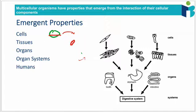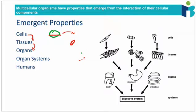The idea of emergent properties is that there's no individual cell that can perform digestion. There's not one cell that can do all the different things we need to do to actually break down a burger and absorb it. What we need is for multiple different types of cells to come together to form what we call a tissue, and for these tissues to then act together to form organs. Through the interaction of these specialized cells we get properties that are unique to the tissue — properties that none of the individual cells were able to perform on their own.